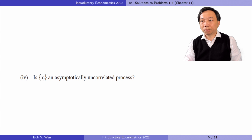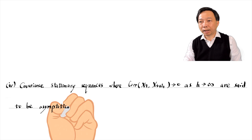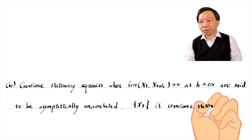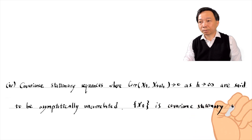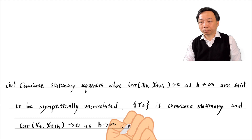In part four, we will show that Xt is an asymptotically uncorrelated process. An asymptotically uncorrelated process is a covariance stationary process where the correlation between Xt and Xt plus H approaches zero as H approaches infinity. First, Xt is a covariance stationary process because its expectation and variance are constant, and the covariance between Xt and Xt plus H depends only on H and not on T. From part three, we know that as H becomes greater than 2, the correlation becomes zero. So Xt is an asymptotically uncorrelated process.